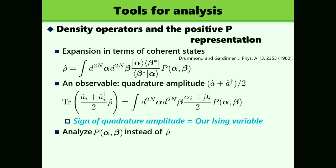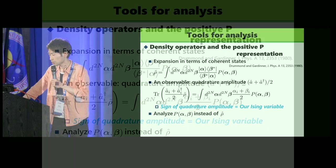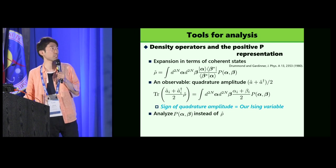One of the important examples of observable is quadrature amplitude. A is an annihilation operator of photons, and A dagger is a creation one. The average of quadrature amplitude is computed, represented as the average of alpha plus beta over 2 over the distribution P.